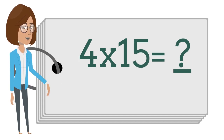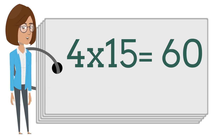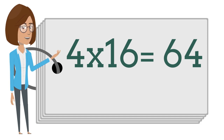4 times 15 is? Can you tell me? Say your answer out loud. 4 times 15 is 60. 4 times 15 is 60. 4 times 16 is? Can you tell me? Say your answer out loud. 4 times 16 is 64. 4 times 16 is 64.